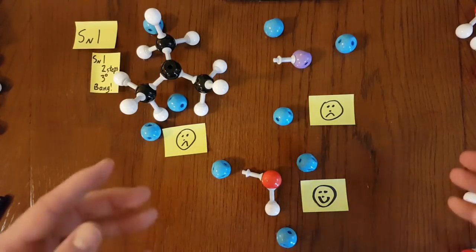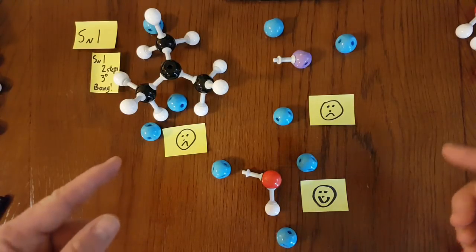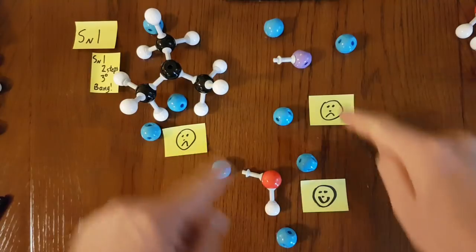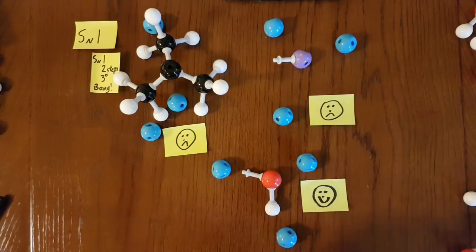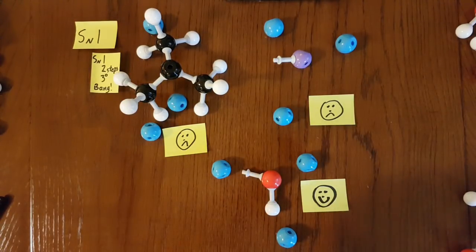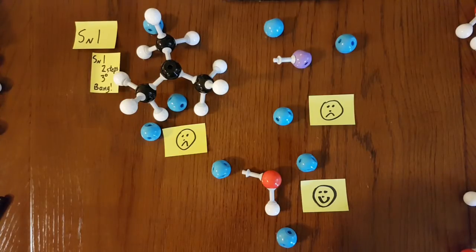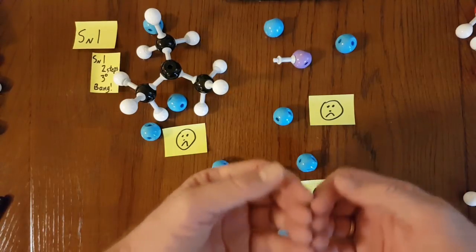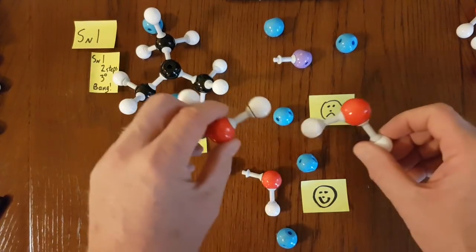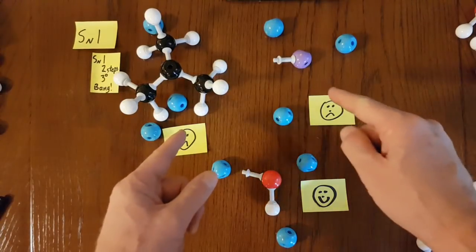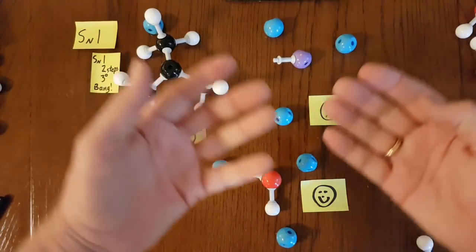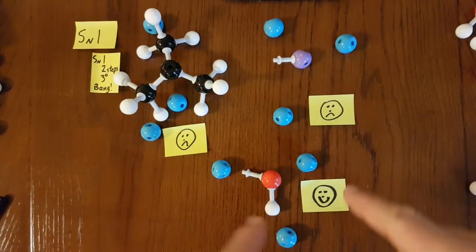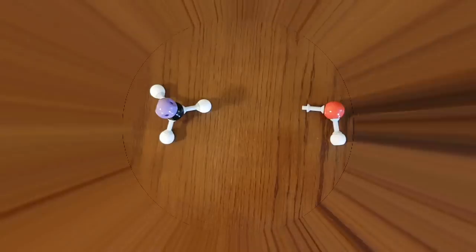So with this aprotic polar solvent, you've got two bad things and one good thing. So this is unlikely to happen. It's less likely to happen. SN1 reactions use protic polar solvents, such as water. Because there was two smiley faces and one sad face before, and now there's two sad faces and one smiley face. Not IB terminology. I'll give you that at the end.